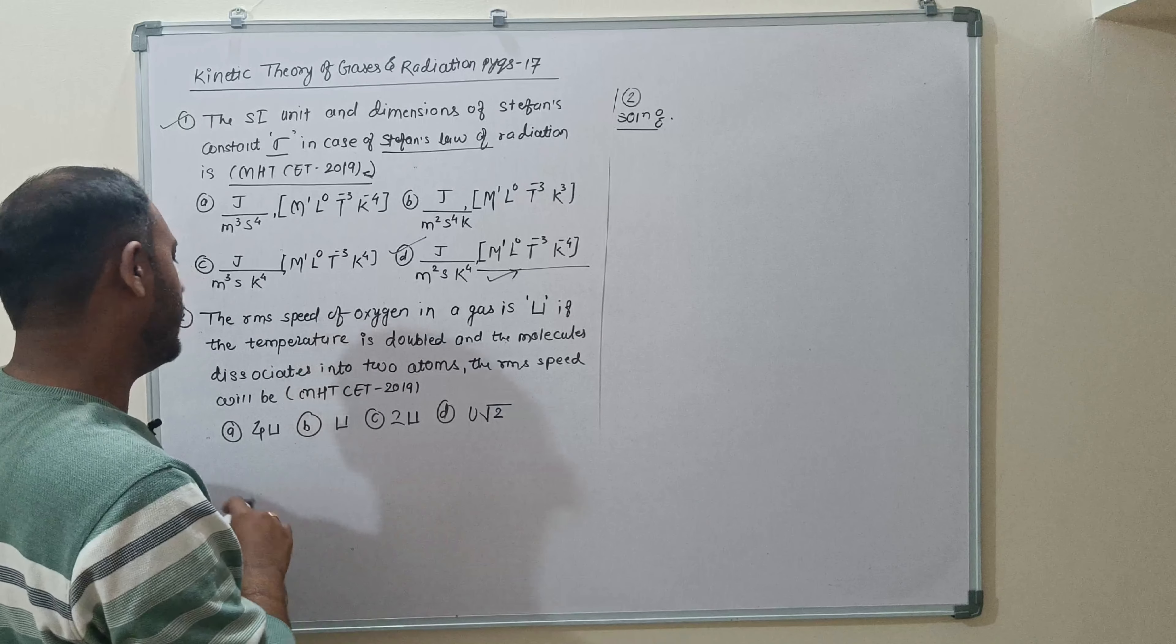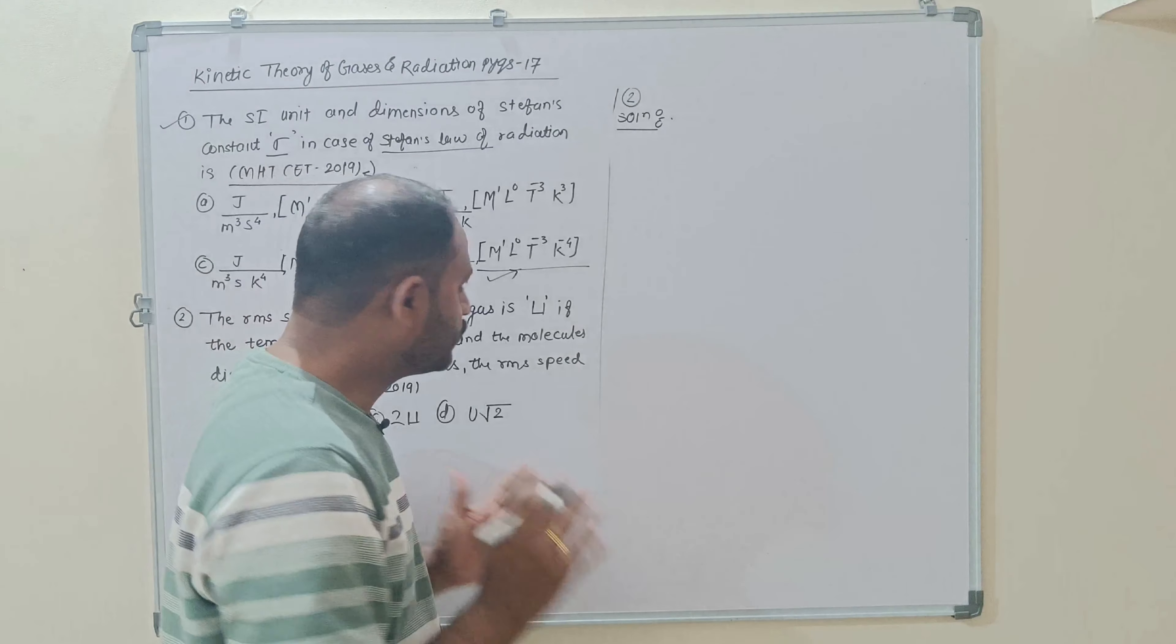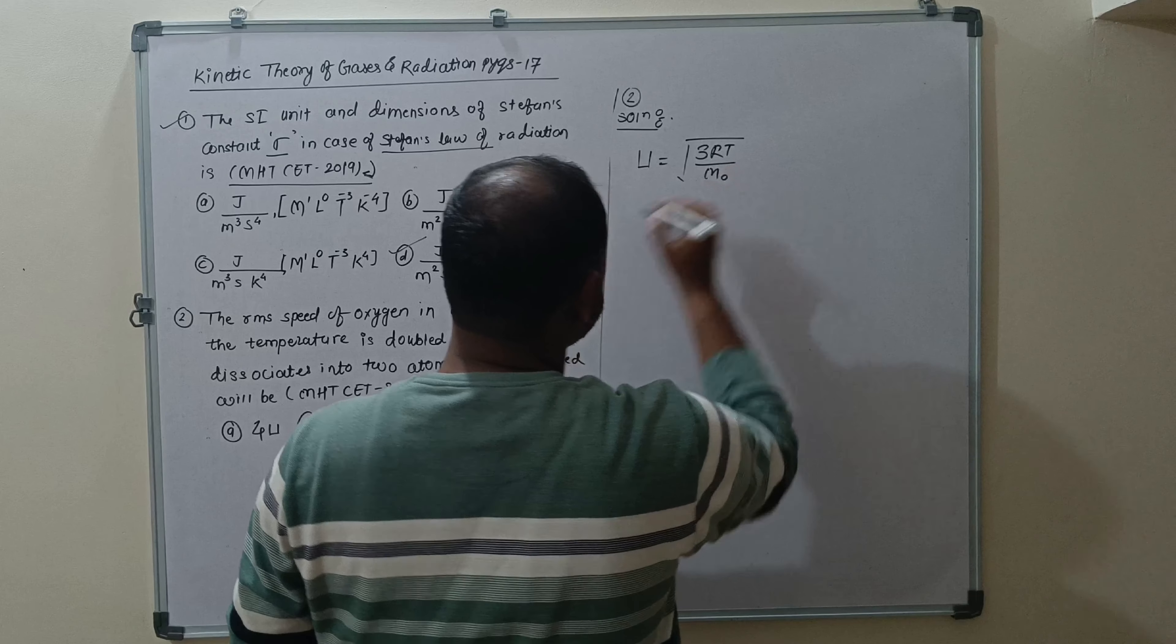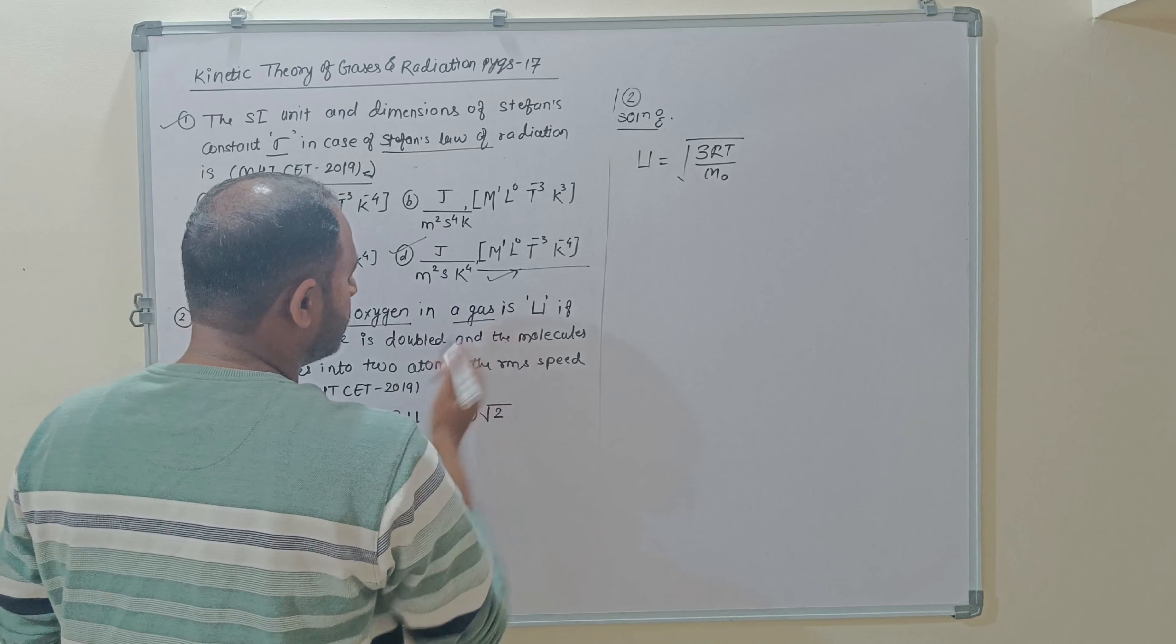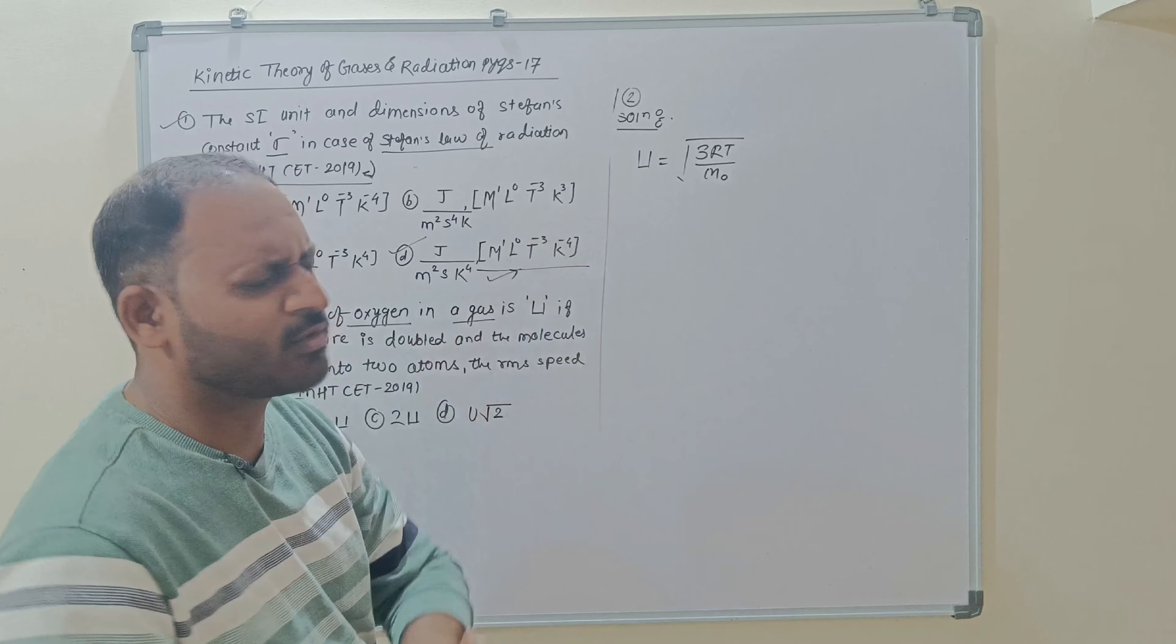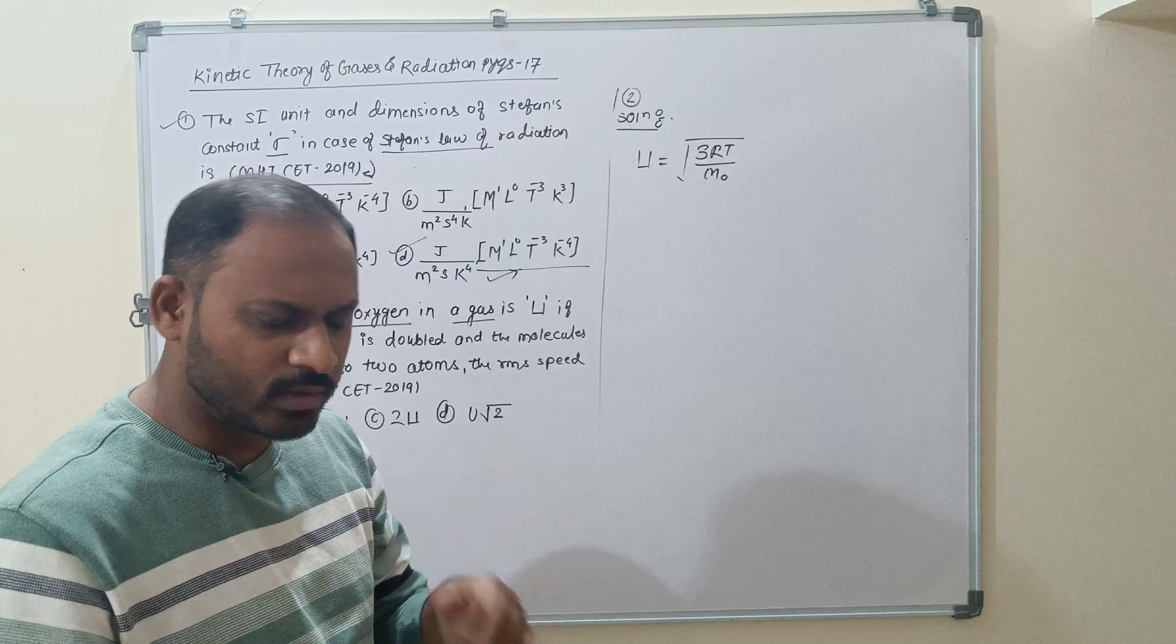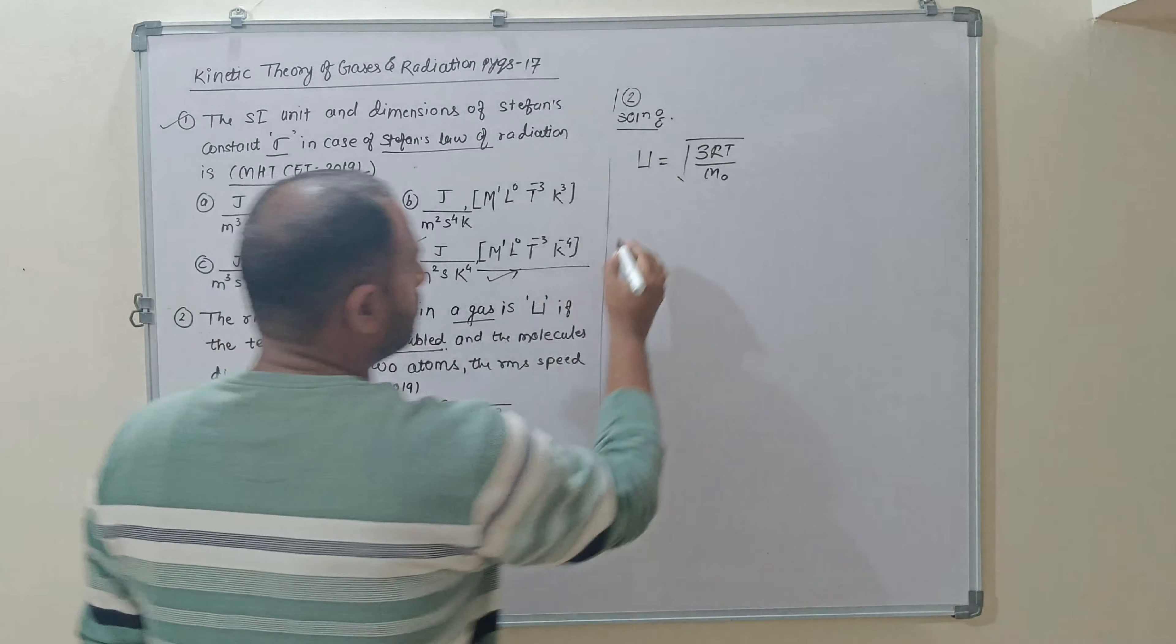Solution for the second numerical: The RMS speed of oxygen in a gas is U. If the temperature is doubled and the molecule dissociates into two atoms, the RMS speed will be? Oxygen gas RMS speed U. The formula is square root of 3RT divided by M not.